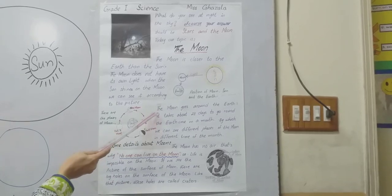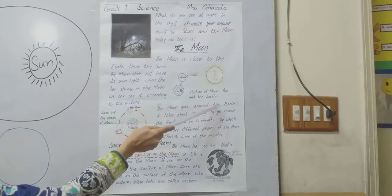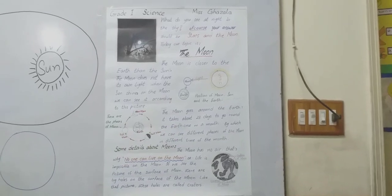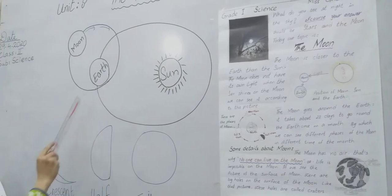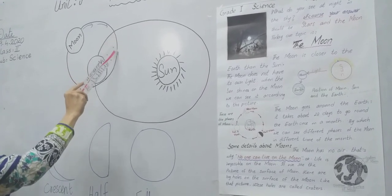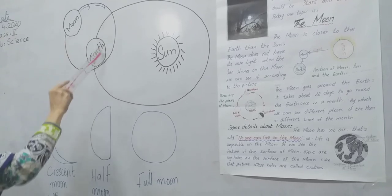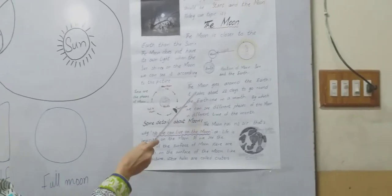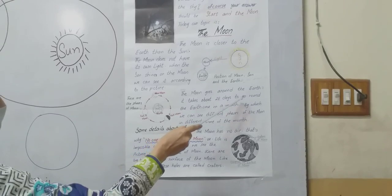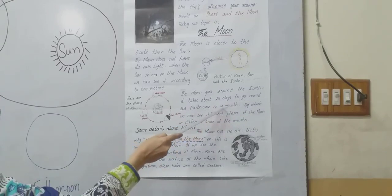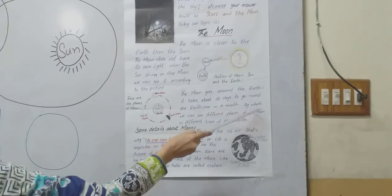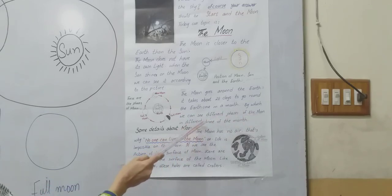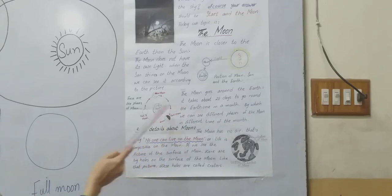Faces of moon. The moon goes round the earth. The moon changes its faces during the revolving around the earth. It takes twenty-eight days to go round the earth once in a month, by which we can see different faces of the moon at different times.